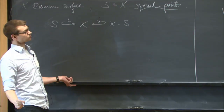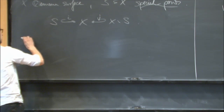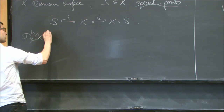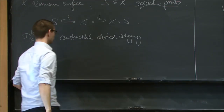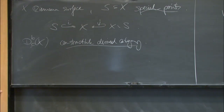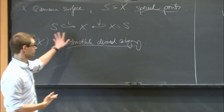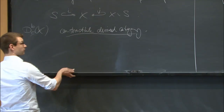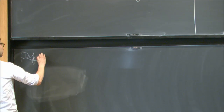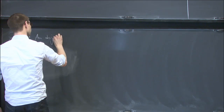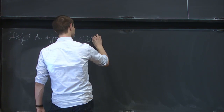We then introduce the derived category of constructible sheaves — the constructible derived category. This is a derived category of complexes of vector spaces whose cohomology sheaves are constructible with respect to this stratification. And then we can already give the definition of what's supposed to be a perverse sheaf: an object p-dot of this constructible derived category is called a perverse sheaf if it satisfies the following conditions.